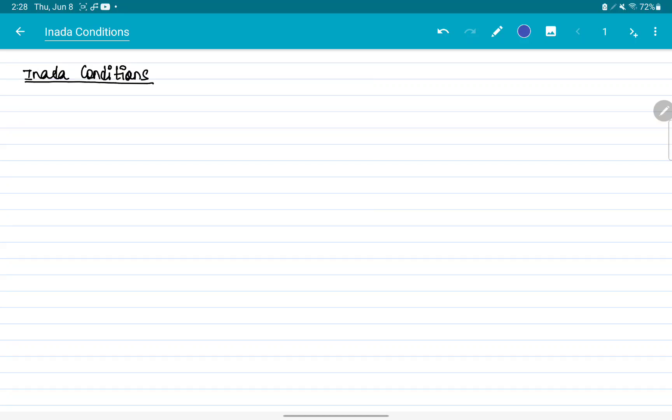But these are two conditions which are also additional assumptions on the production function. So we'll state the assumptions and then check how it interacts with the intensive form production function, as we have done with the other property. So what are the Inada conditions?